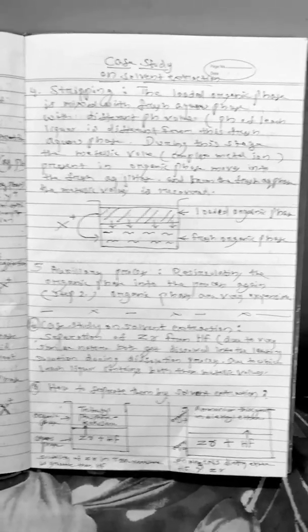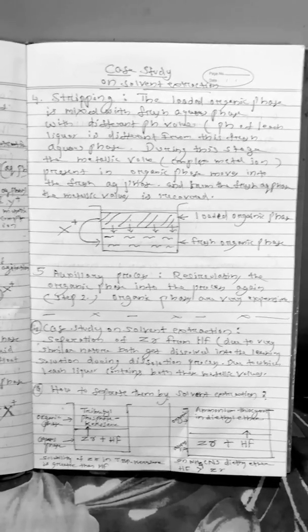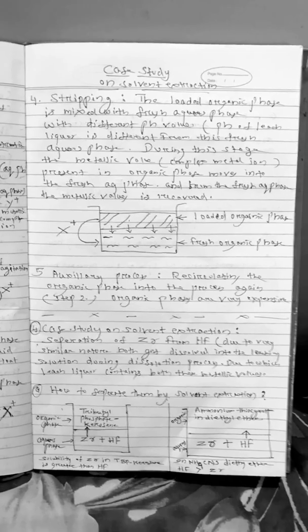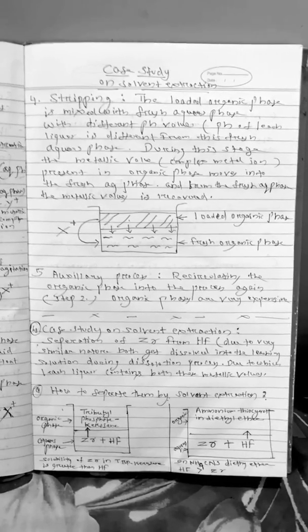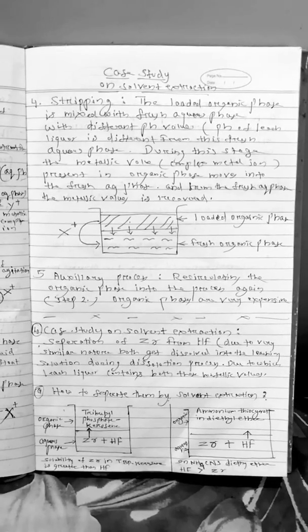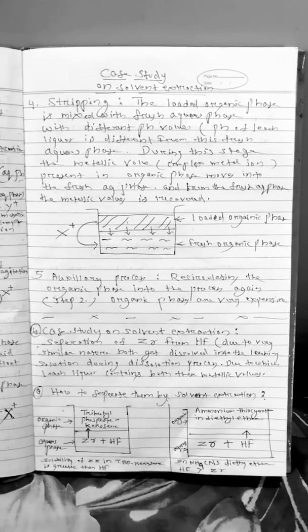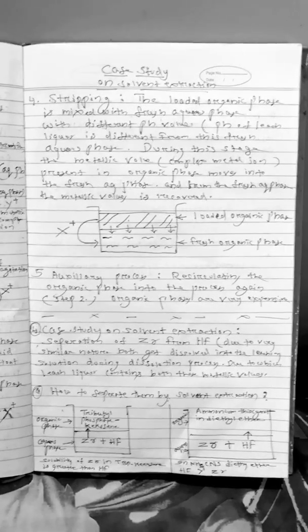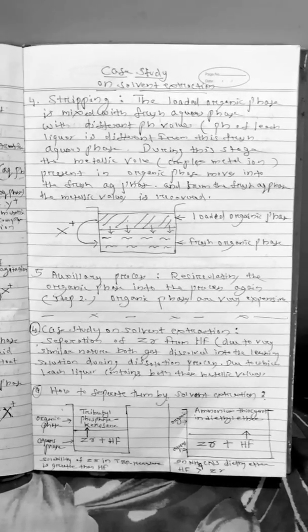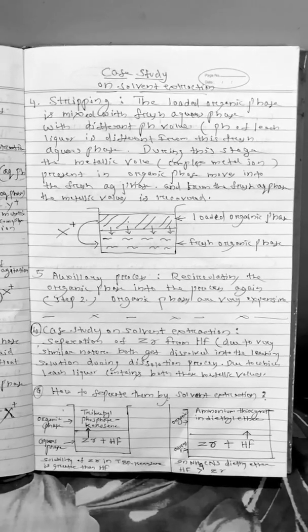Next, the fourth stage is the stripping stage where we bring a fresh aqueous solution and we add this fresh aqueous solution to the loaded organic phase. So here we do mixing and what happens just opposite to the second stage occurs. The metallic values which are present in the organic phase will migrate to the aqueous phase. Then we can do partitioning simply.